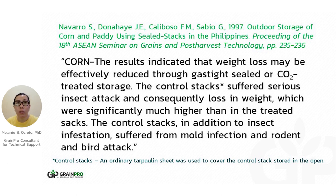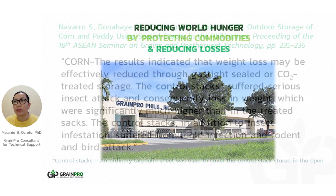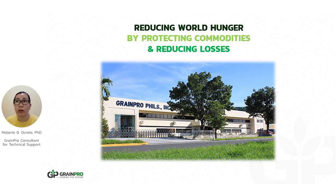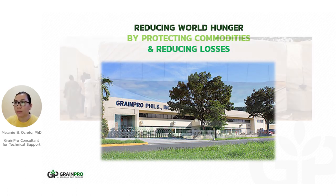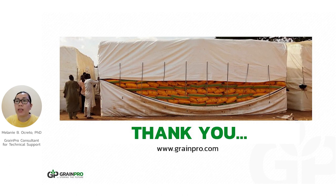With this technology, we are able to help farmers and other users prevent possible post-harvest losses. We want to reduce world hunger by protecting the commodity and reducing losses by providing clients, farmers, and users with an effective technology which could prevent such losses. If you want to know more about our technology, please visit www.grainpro.com. Thank you for your time.